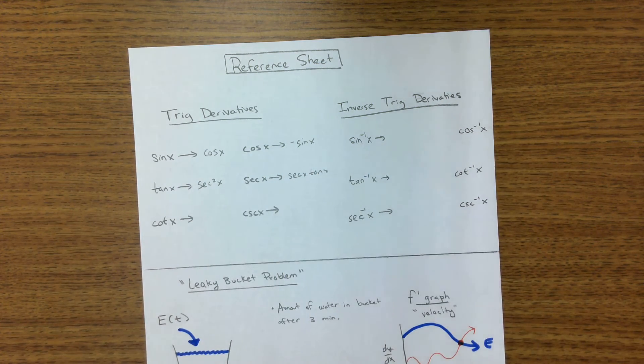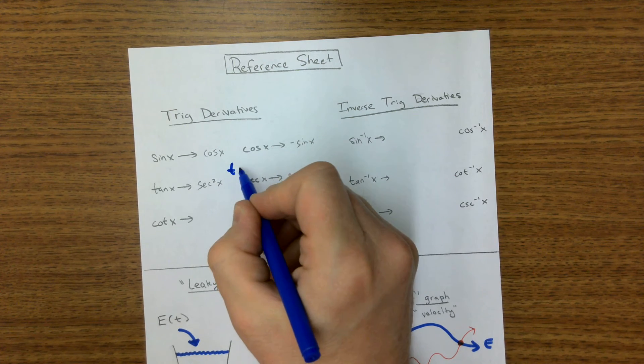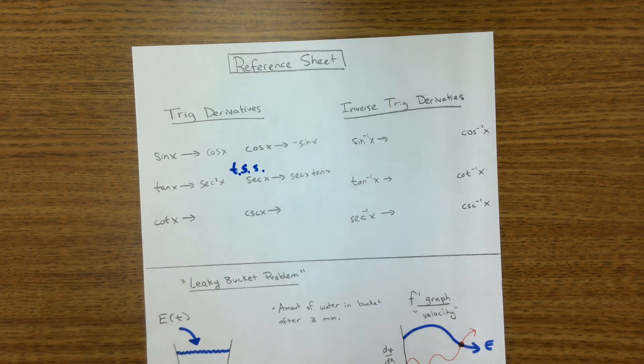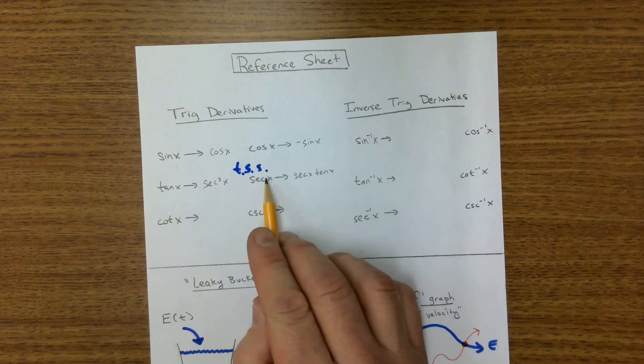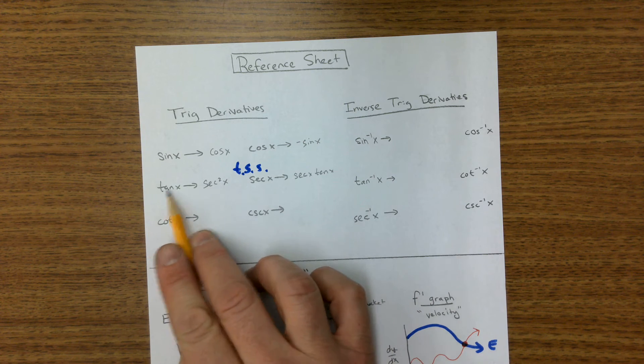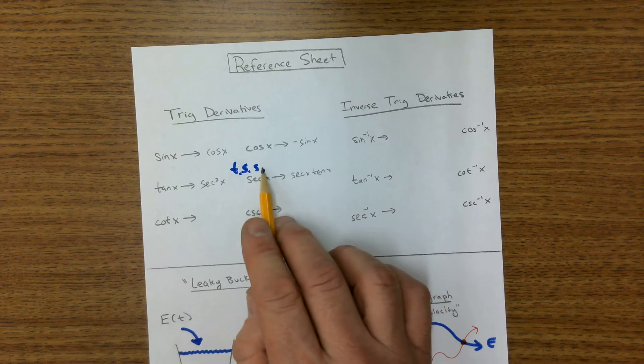But what I remember here is the letters T, S, and S. Because both of these have one tangent and two S's. One tangent and two S's. So one tangent, two S's, one tangent, two S's. And the same thing down here, but it's a cotangent and two secants.